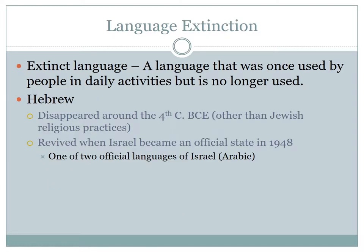We've been talking about language creation, but the reality is that since 1500, approximately 300 languages have ceased to be spoken by anyone. Since many of these languages lacked a literary tradition — a written component — they are truly lost, including an estimated 50 Native American languages. One language that did have a literary tradition is Hebrew. Hebrew was considered an extinct language because it ceased to be used in daily activities around the 4th century BCE. But it was maintained and preserved through writing and Jewish religious ceremonies.